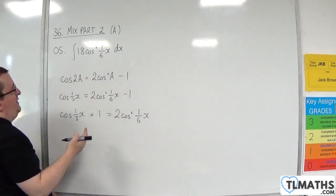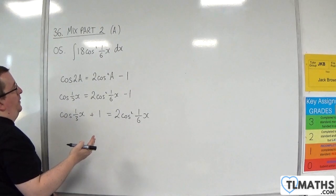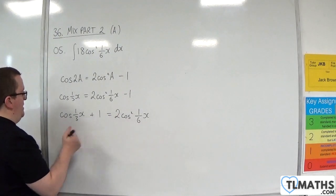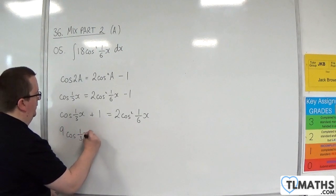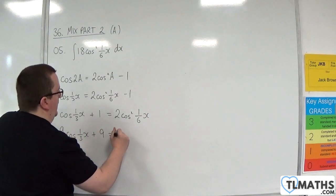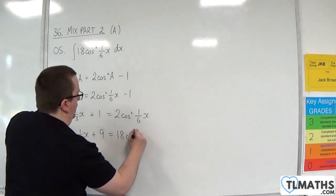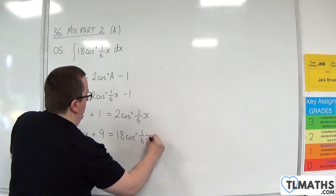But we've got 18 cosine squared of one-sixth x. So, if I multiply both sides by 9, we get 9 cosine of one-third x plus 9 is 18 cosine squared of one-sixth x.